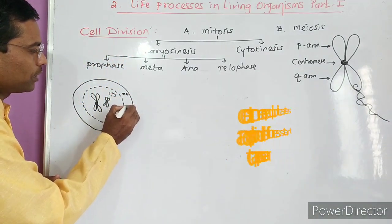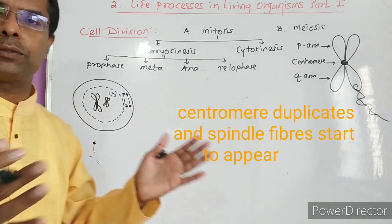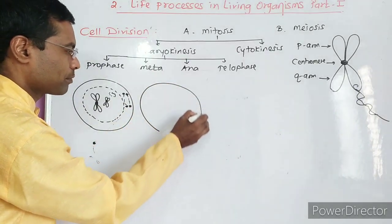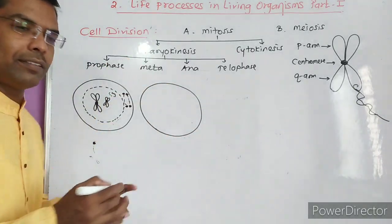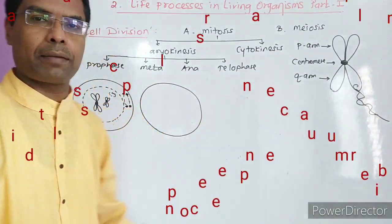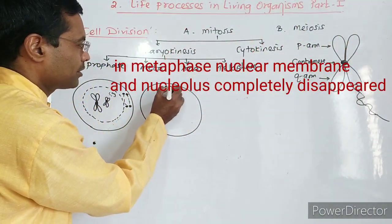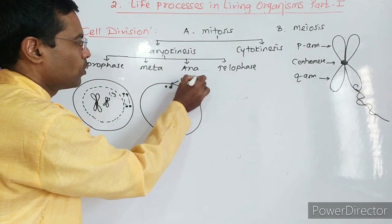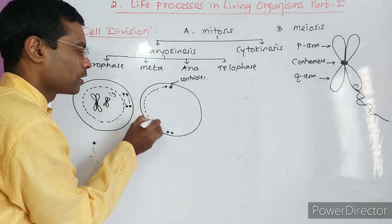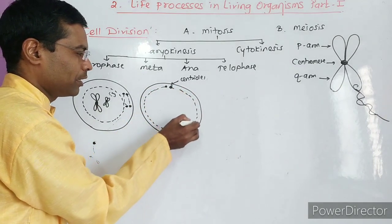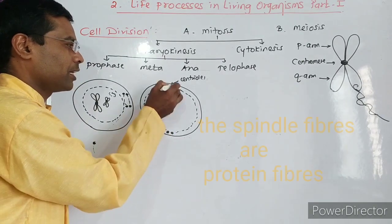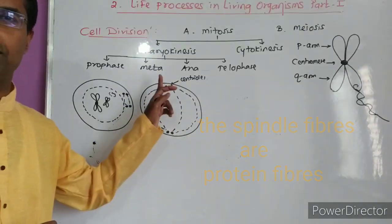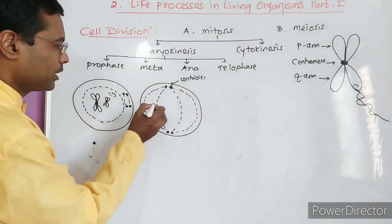The centromere duplicates and starts to move to the two poles. In metaphase, now see what happens. In metaphase, the nuclear membrane and nucleolus completely disappear. The centrioles - these are centrioles - they move towards the two ends. These are the spindle fibers, protein fibers that are formed from pole to pole, from this centriole to that centriole.